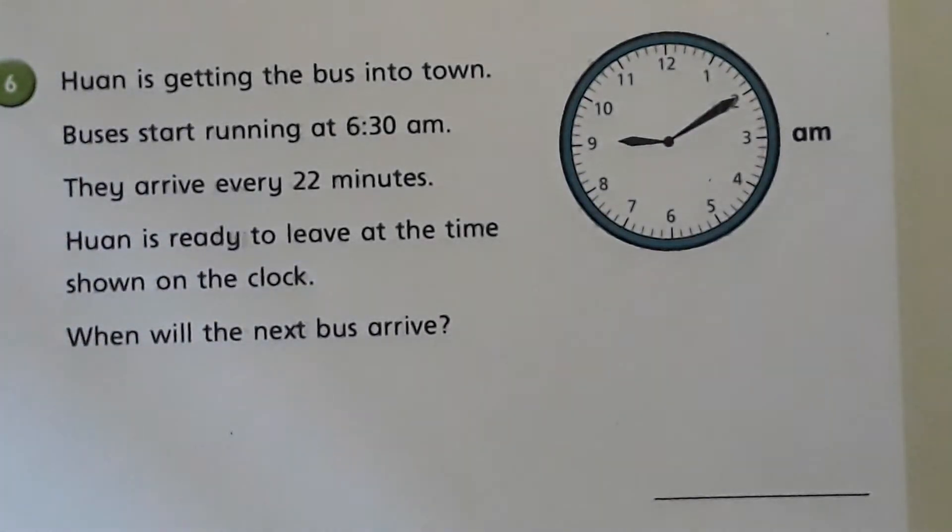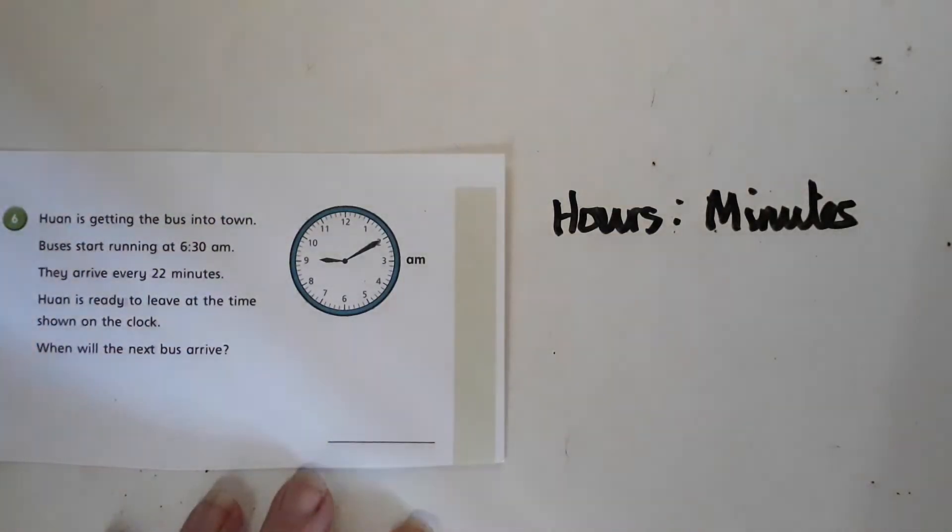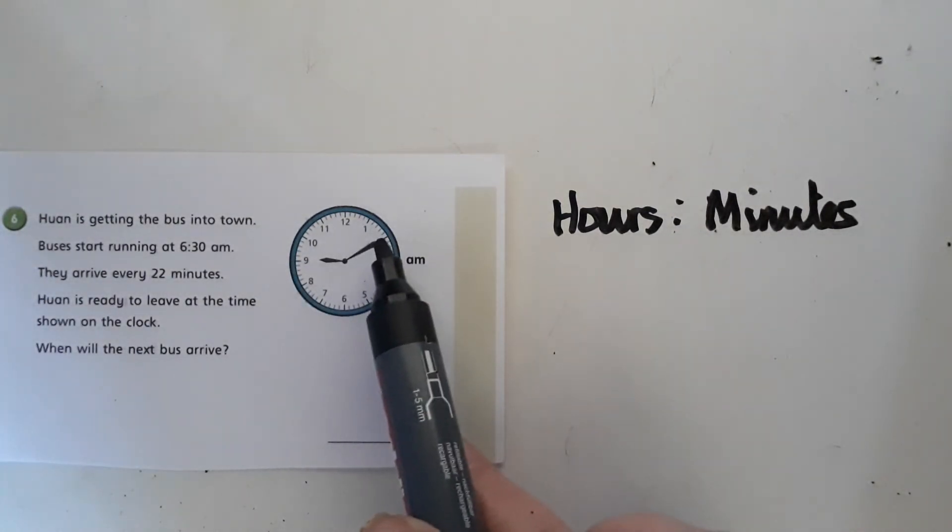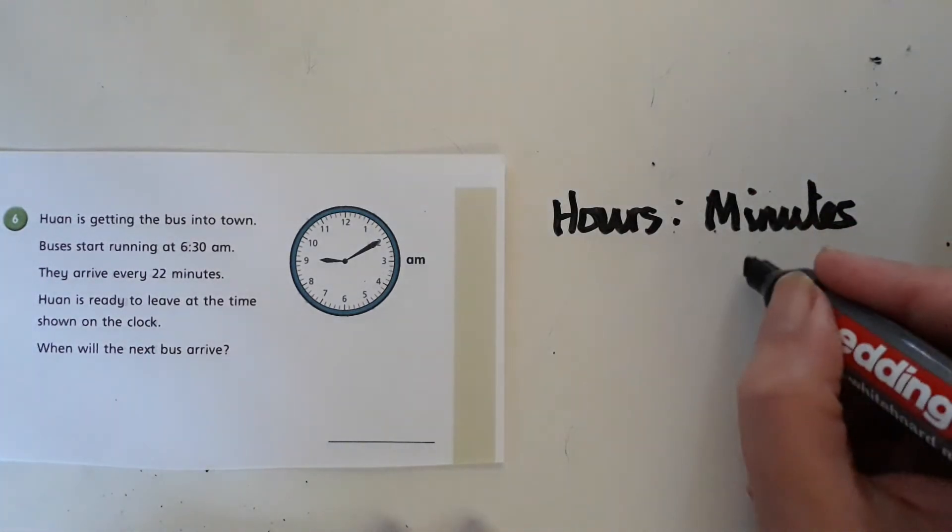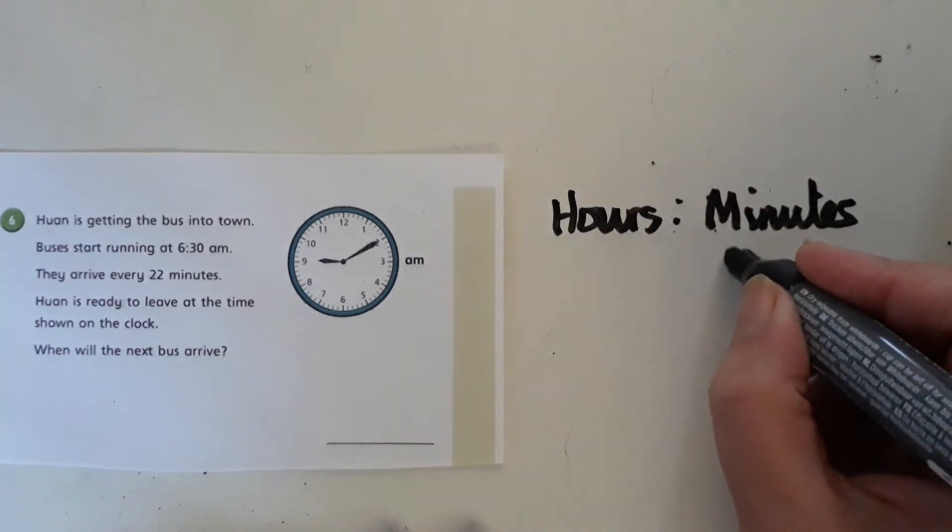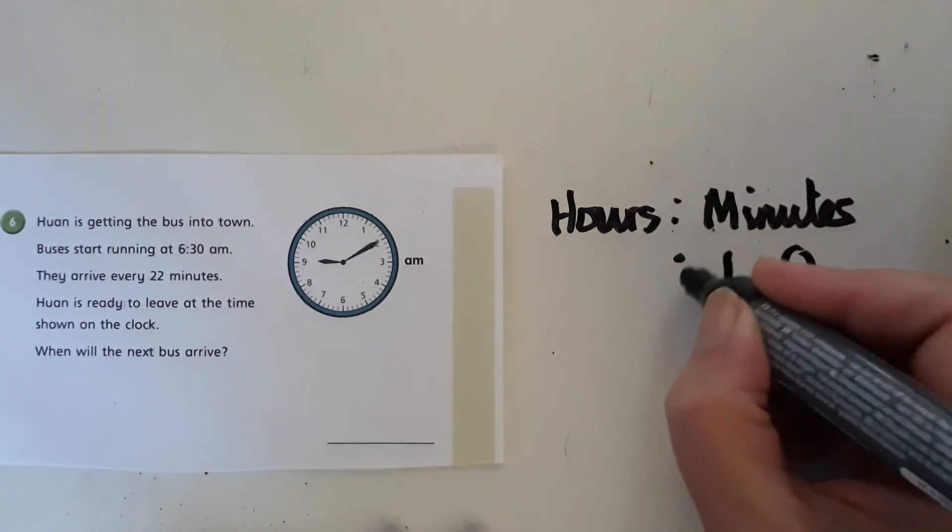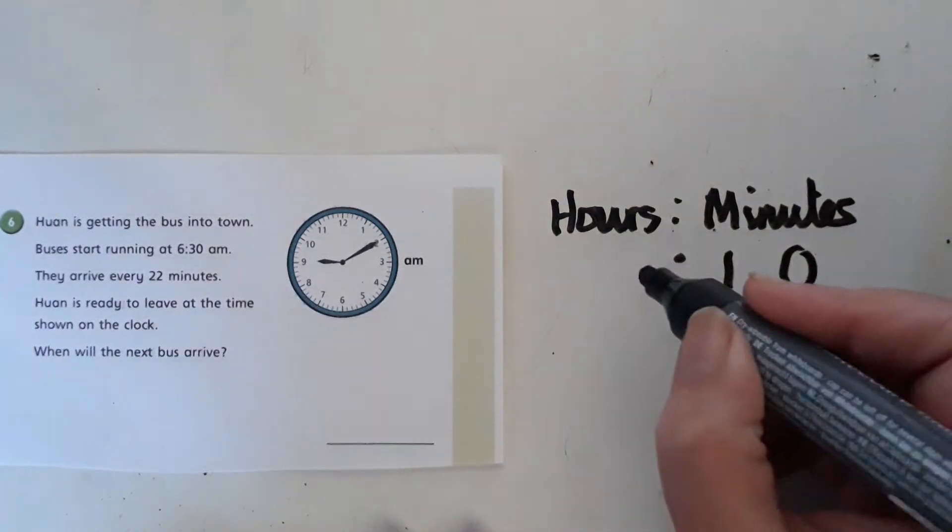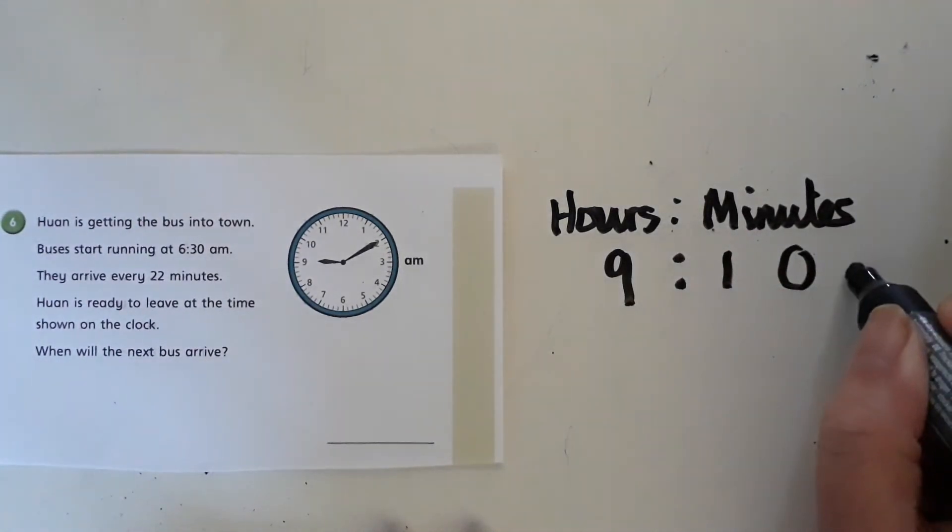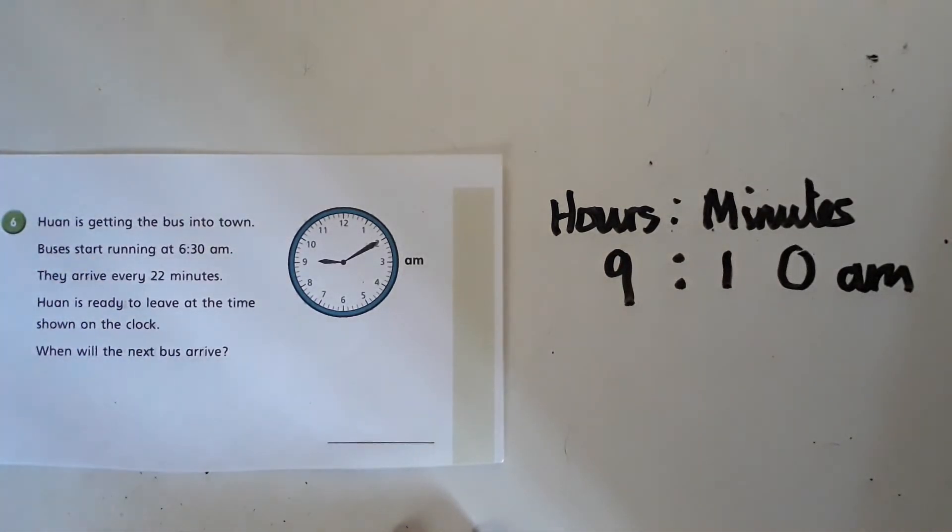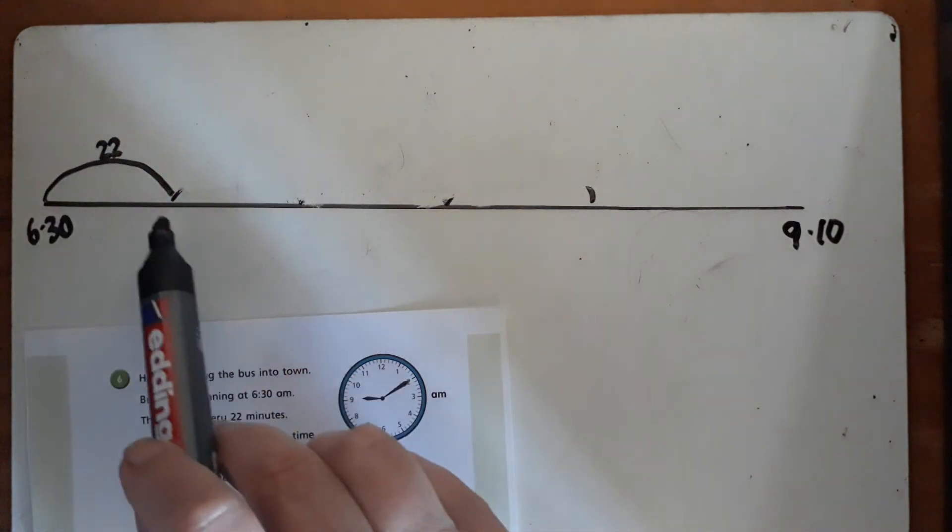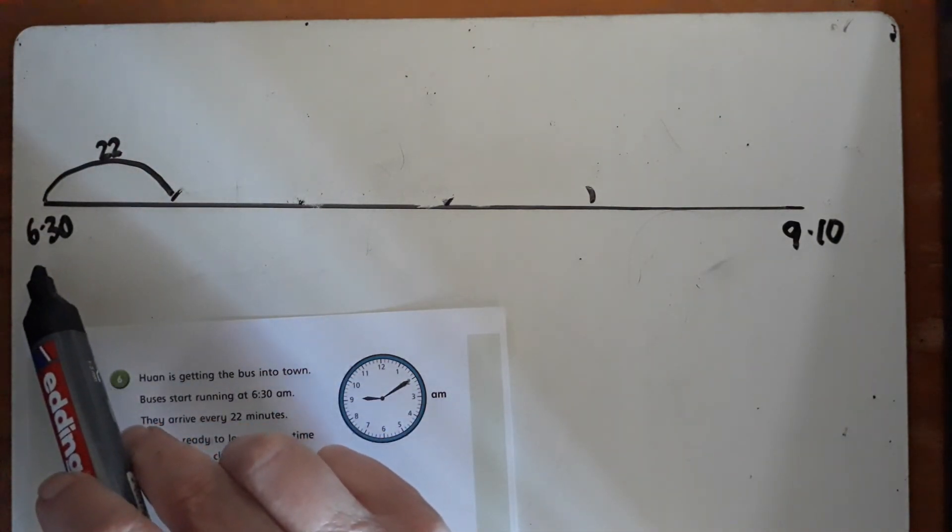The first thing we're going to do is work out the time on the clock. The minute hand has come around and is pointing exactly on the 2, so that would be 10 past. In our minutes we have 10. The hour hand has just passed nine, so we're looking at 9:10 AM.